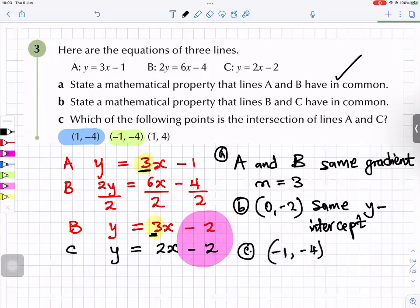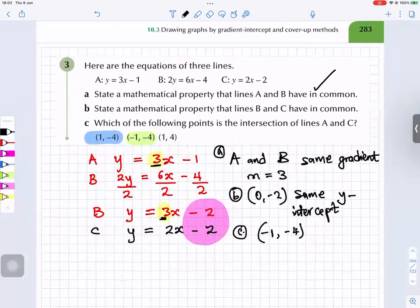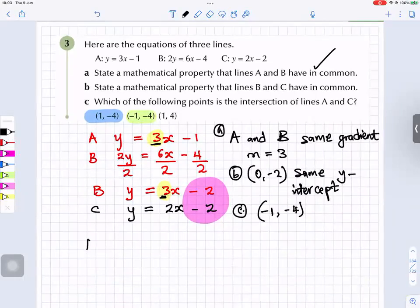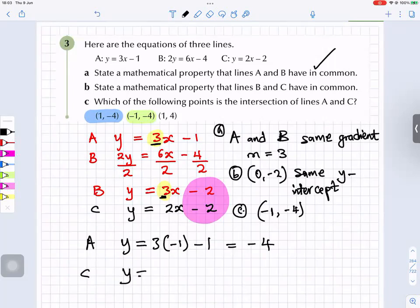Comma minus 4. Because if you put that in A, let's just check it. If you put that in C, so y equals 3 times minus 1 minus 1 is minus 4. If you put that in C, y equals 2 times minus 1 minus 2 is equal to minus 4. So they have that same coordinate. So that's correct, fantastic.